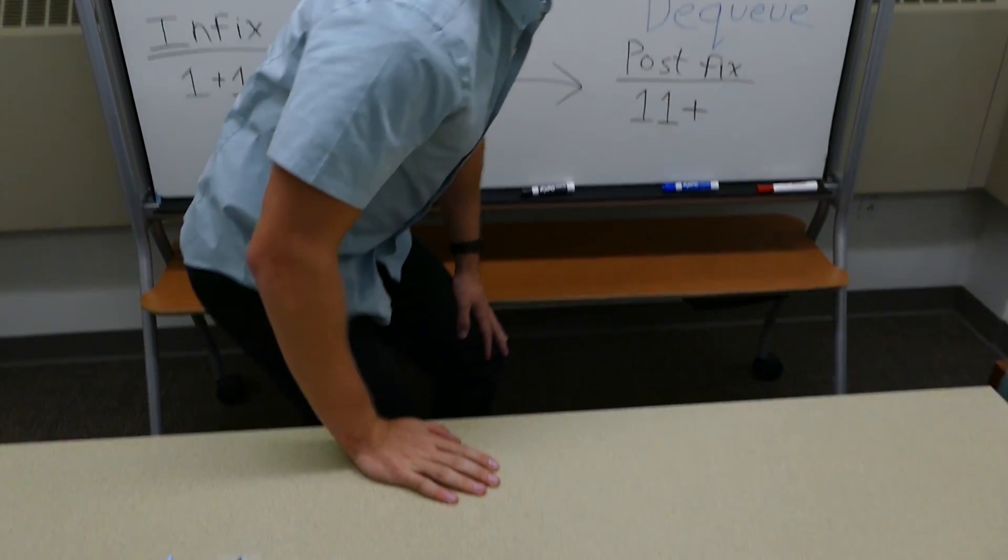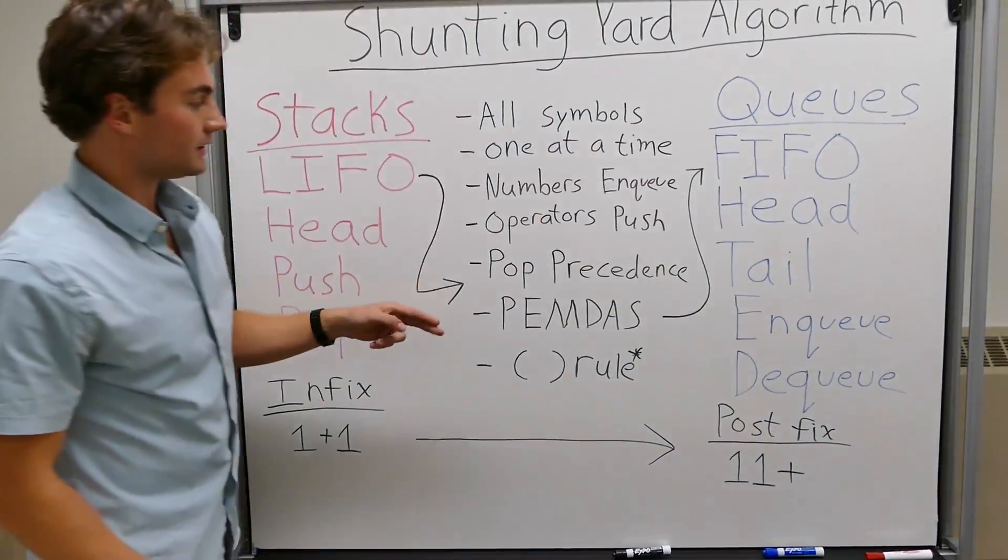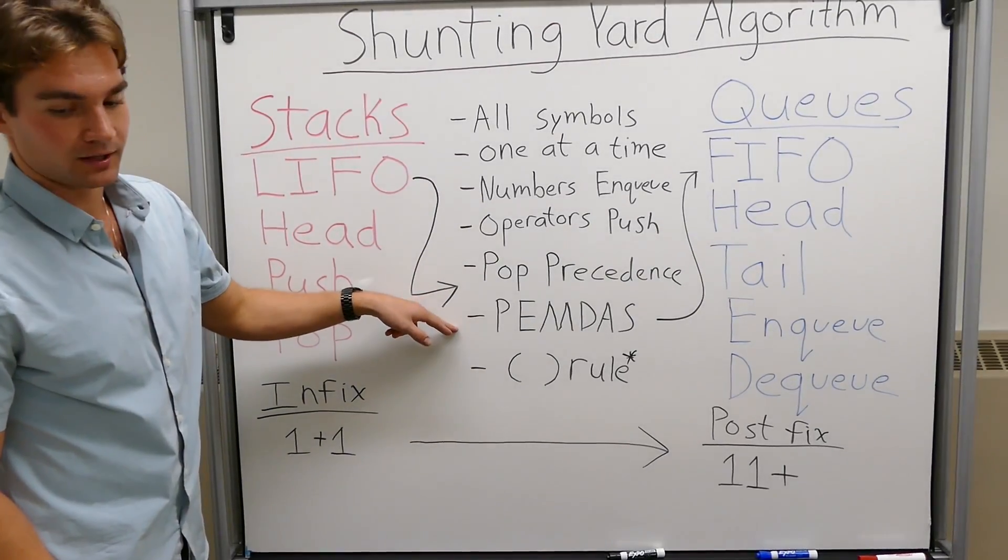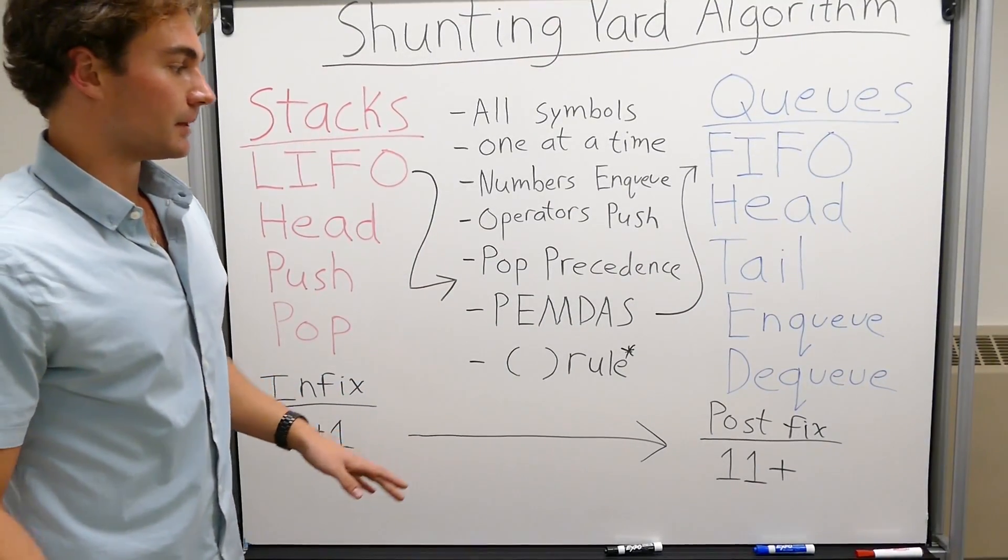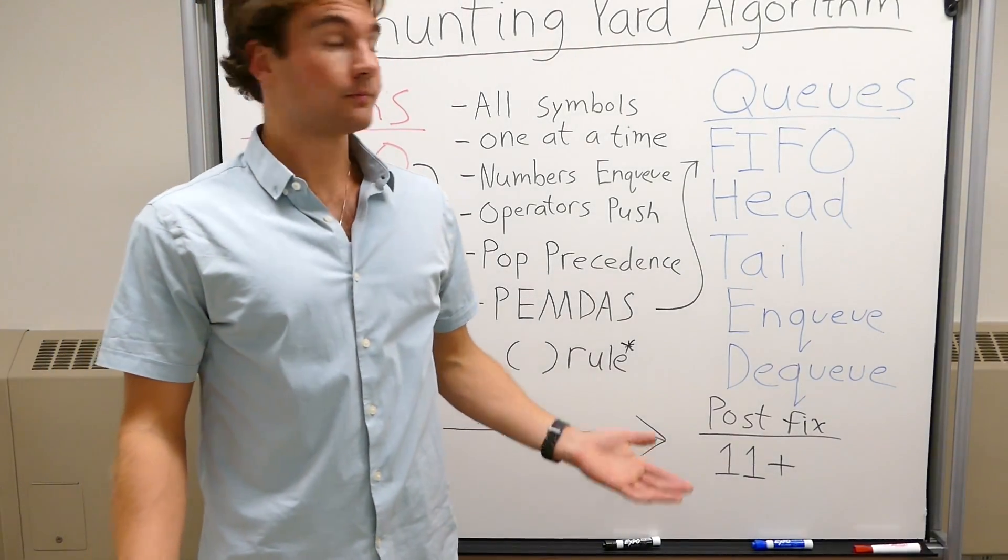The main things to check out: LIFO and FIFO are related to the pop precedence and PEMDAS. It's very important to keep in mind—it's the trickiest part about the algorithm. Otherwise, it's very straightforward.